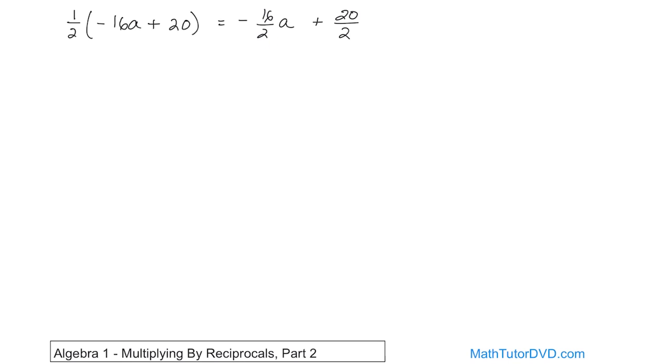The first fraction is 16 divided by 2, which can be written as negative 8a. The negative just comes along for the ride. 20 divided by 2 is just going to be 10. So the final answer is negative 8a plus 10.